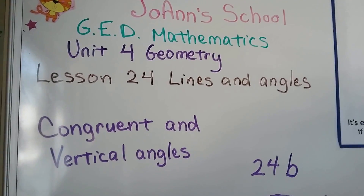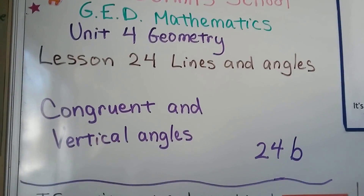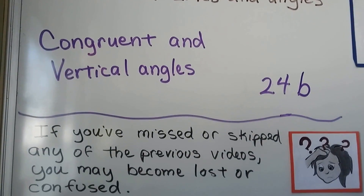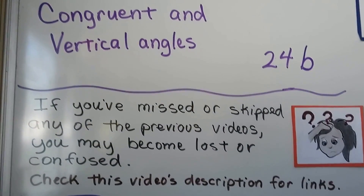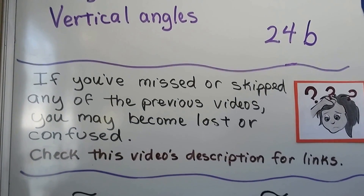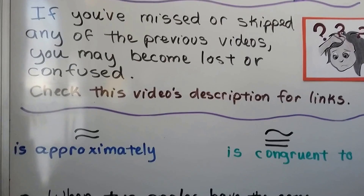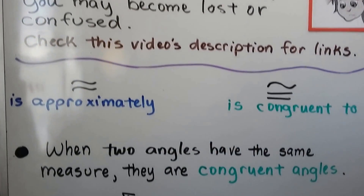Congruent and Vertical Angles. This is Lesson 24b, the second lesson in Lesson 24, and there are links in the description if you need them.